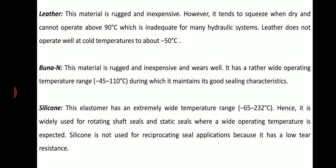Silicone: this elastomer has an extremely wide temperature range of minus 65°C to plus 232°C. Hence, it is widely used for rotating shaft seals and static seals where a wide operating temperature is expected. Silicone is not used for reciprocating seal applications because it has low tear resistance.